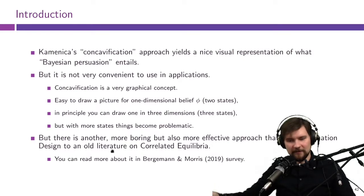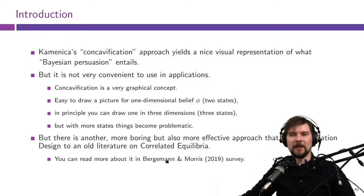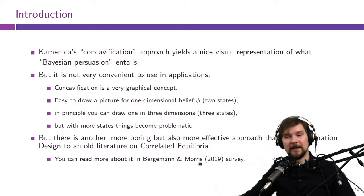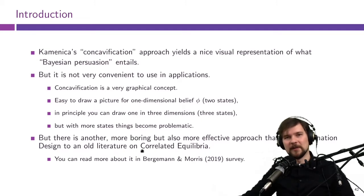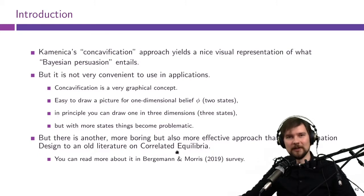That's partly why we're considering this other method, which goes by the moniker of 'information design,' while the previous method went by 'Bayesian persuasion.' This new method was developed by Bergemann and Morris — you can read their survey if you want to know more. If you're familiar with intermediate game theory and the concept of correlated equilibria, this second approach is closely related to that.